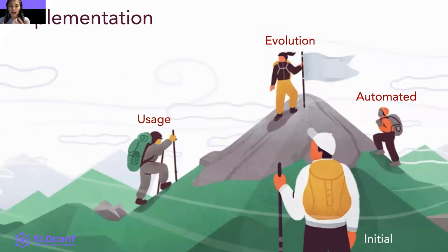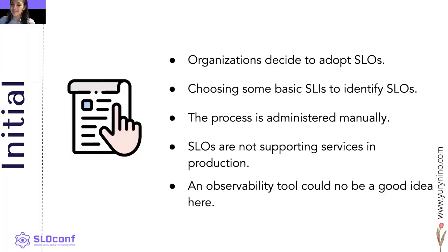Now let me talk about implementation, the second axis. For this axis, we have learned that there are four milestones that can help us move in this journey. At the initial stage, SLOs are not a concern for organizations. Since the organization begins an SLO journey, signals at this stage include: SLOs don't support the service in production, and results don't reflect business metrics. In practice, it consists of reading logs, generating reports, and using manual charts. I don't recommend using an observability tool in these first actions — the tools available in the market are very powerful and expensive, and if you don't have experience, you may feel overwhelmed.